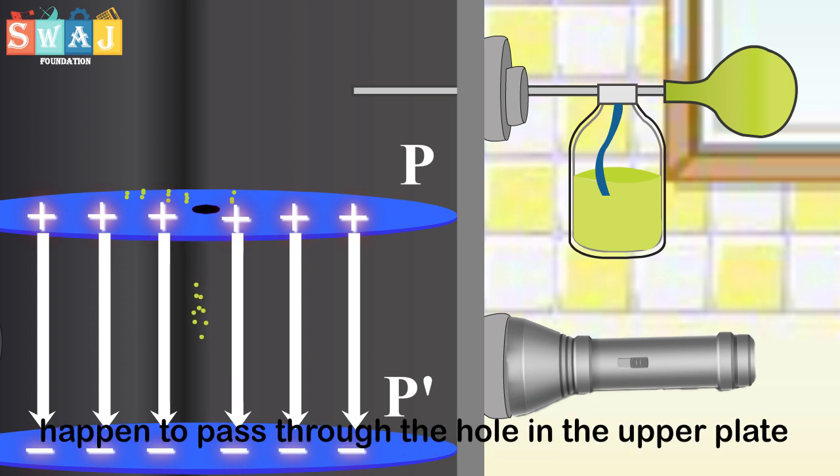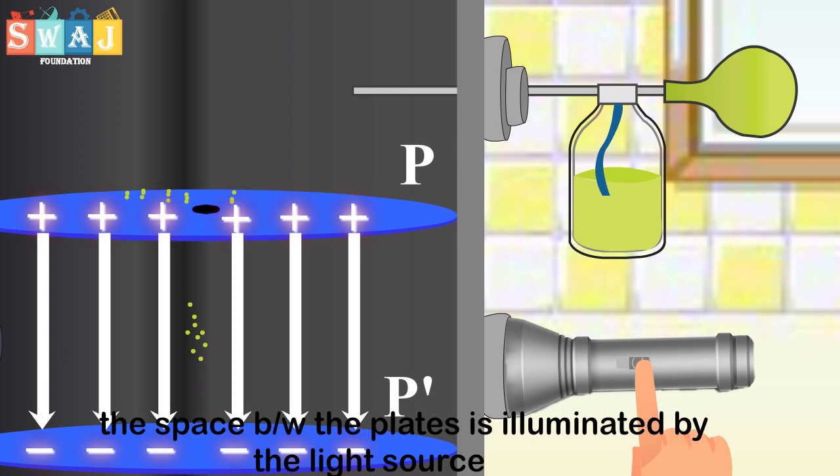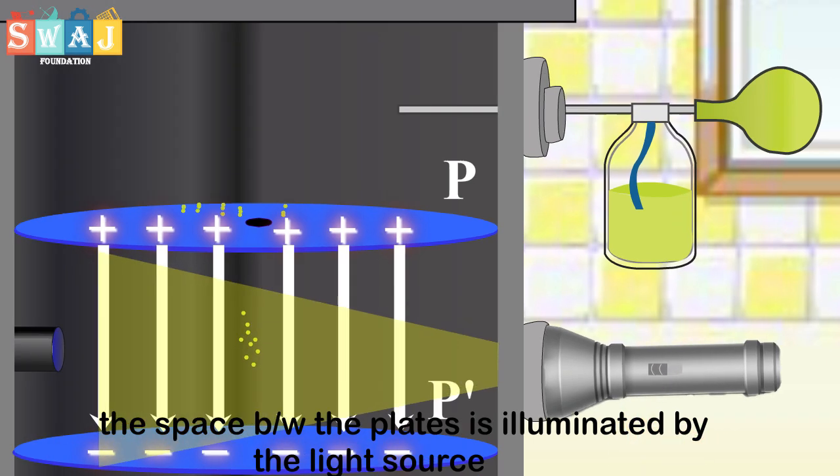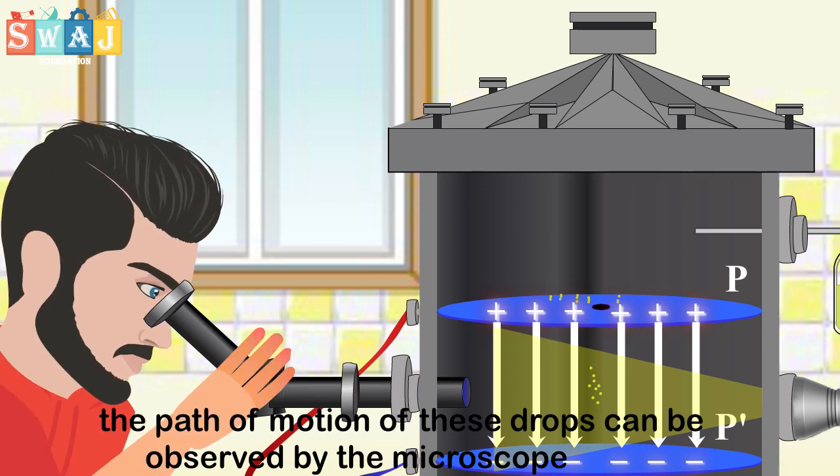Some of these drops happen to pass through the hole in the upper plate. The space between the plates is illuminated by the light source. The path of motion of these drops can be observed by microscope.